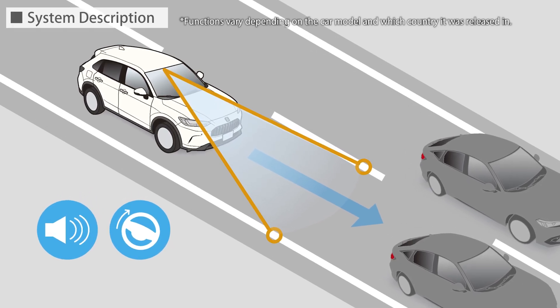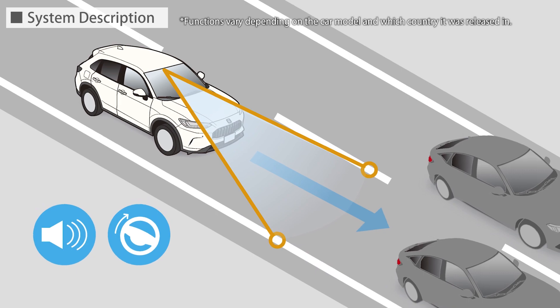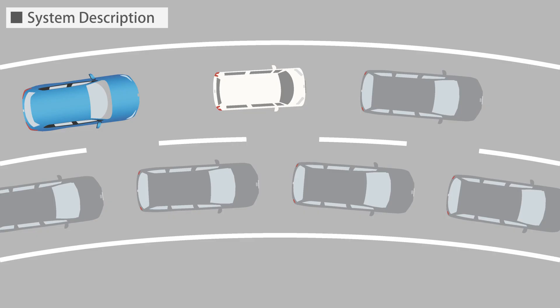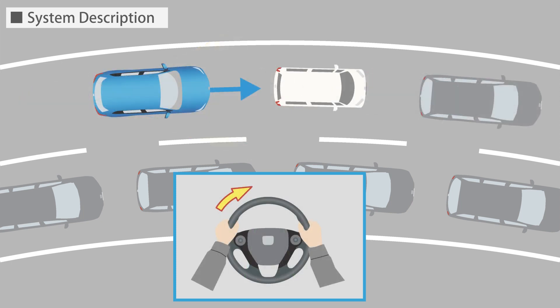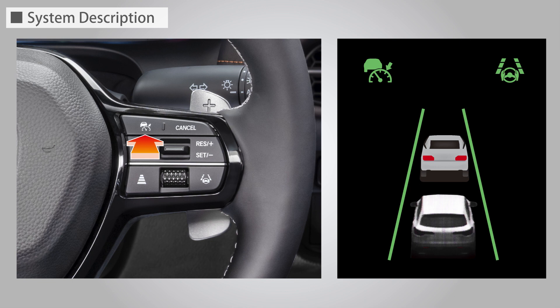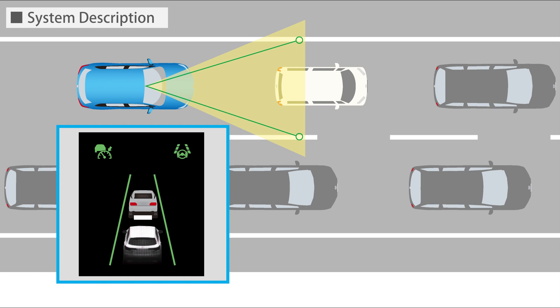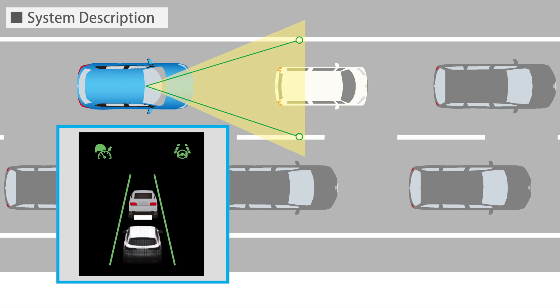Traffic jam assist is a function that assists the driver in driving by assisting steering wheel operation to keep the vehicle near the center of the lane when driving at low speeds, such as in a traffic jam. At the same time, by turning on adaptive cruise control with low speed follow, the distance between vehicles is maintained while adjusting to changes in the speed of the vehicle in front, further assisting the driver.